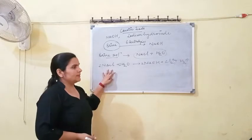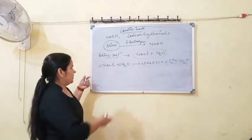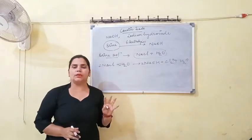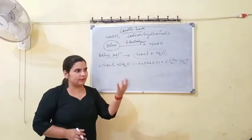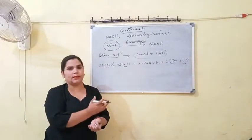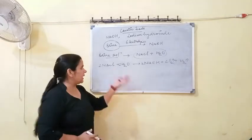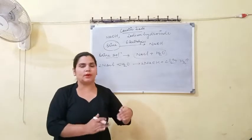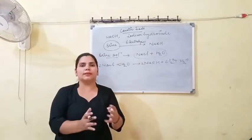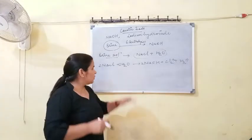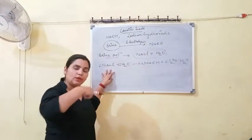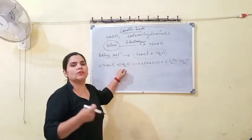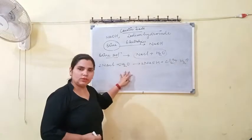A question arises: NaCl is found in crystalline form, so you cannot pass current through solid NaCl. The reason is that current can pass only when ions are present. To convert NaCl into its ionized form, it is very necessary to have a solvent present, and that solvent will be water.